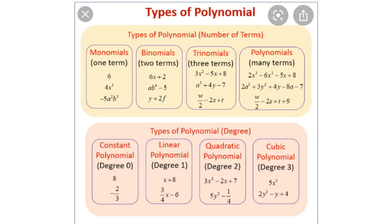In this lecture, we studied what is a polynomial — an algebraic expression in which the powers of the variable are natural numbers. We studied the degree of a polynomial — the highest power of a variable, or the highest sum of powers of variables for polynomials with more than one variable. We also studied types of polynomials by number of terms: monomial, binomial, trinomial; and by degree: constant, linear, quadratic, and cubic polynomial. We will continue with other topics in the next lecture.